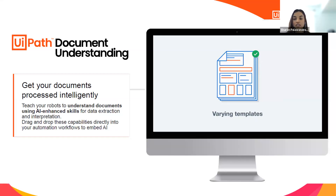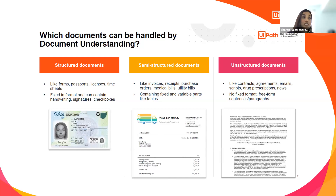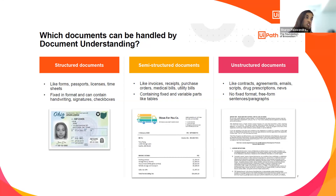Next I'm going to touch briefly on document understanding. Document understanding is the solution that UiPath offers to intelligently process documents. The AI Center offering can be used within the document understanding ecosystem. When we look at what kind of documents can be processed, this mostly comes down to the nature of the document. Documents can be categorized as structured, semi-structured, or unstructured. A structured document consistently has the same format — for example, a driver's license, which will always have the same format.